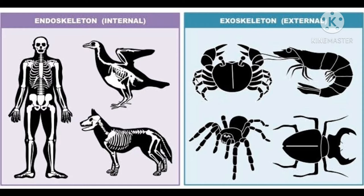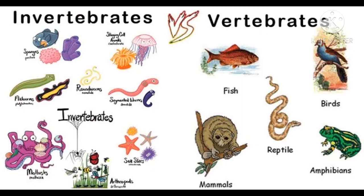Let me clarify that endoskeleton is present in some animals, whereas exoskeleton is present in some other animals. The skeleton present outside the body is known as exoskeleton, and the skeleton present inside the body is known as endoskeleton. You can see examples of such animals in the picture. The two groups of animals are invertebrates and vertebrates. Invertebrates are animals which do not have a backbone; vertebrates are animals with a backbone.